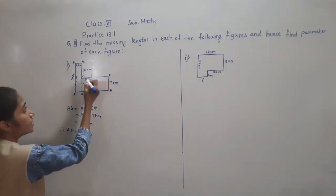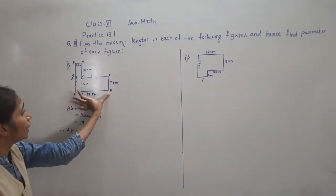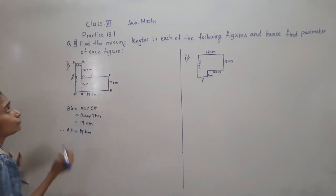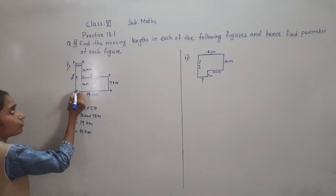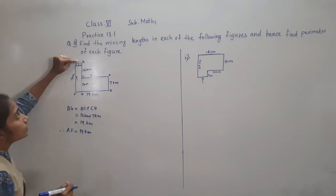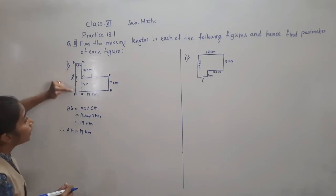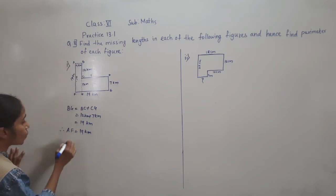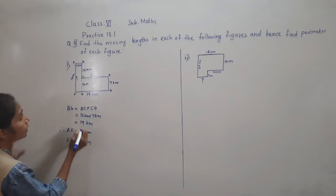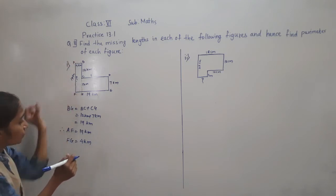Now what we have to find? We have to find CD. Now see FE — total FE is 19 km. AB is 4 km, and FG is also 4 km because FG is the opposite side of AB. Opposite sides of rectangles are equal, so FG = 4 km.